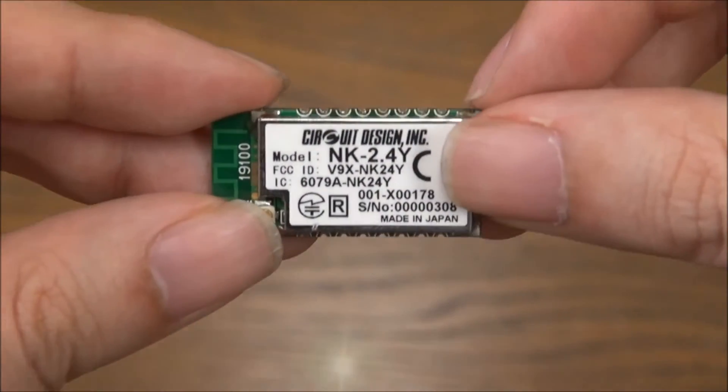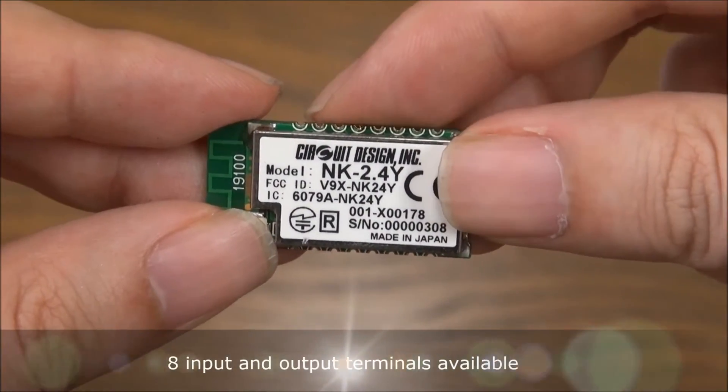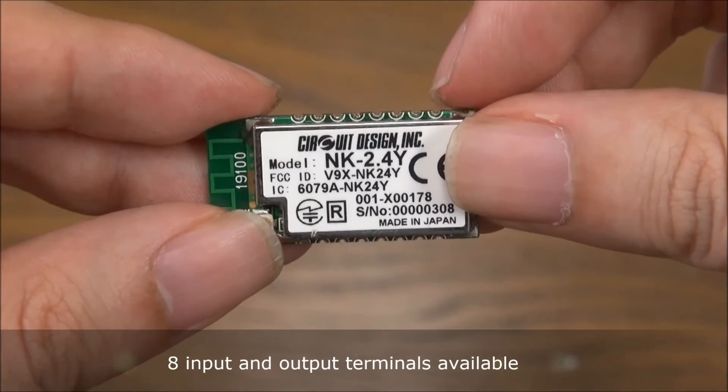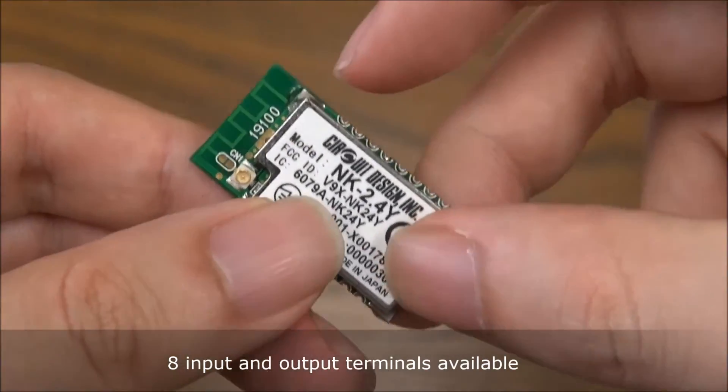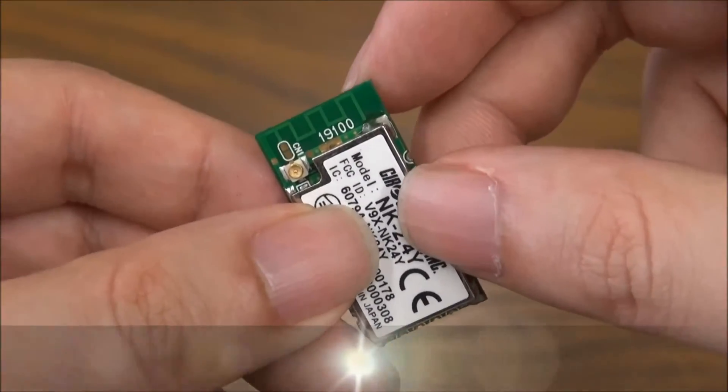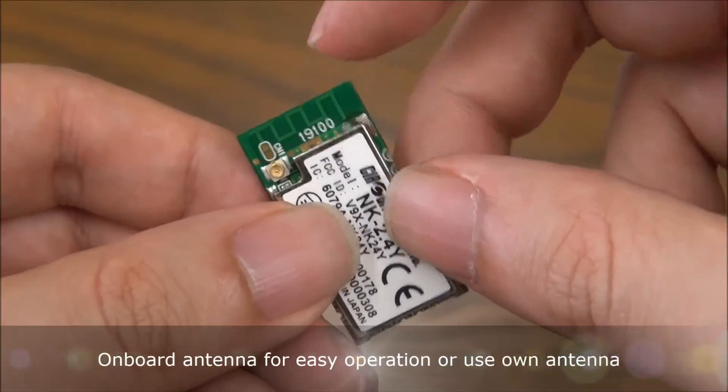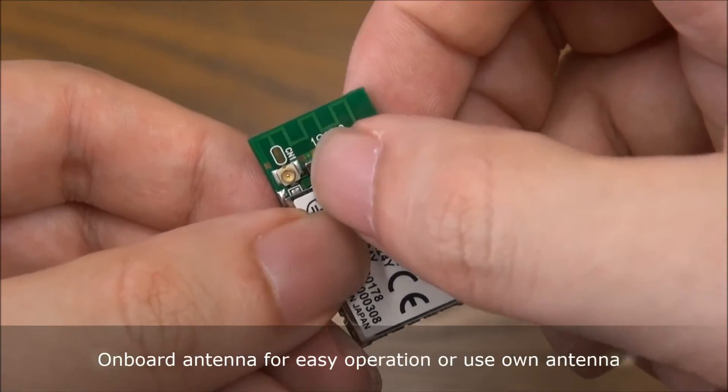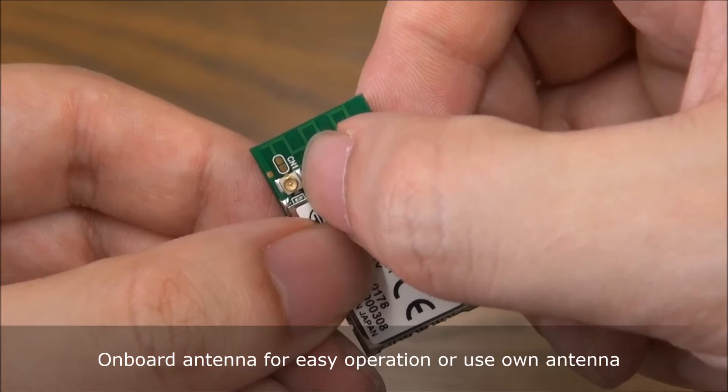So how many inputs and outputs do we have? We've got eight IOs available, and you can use the onboard pattern antenna or your own antenna by connecting to this jack.